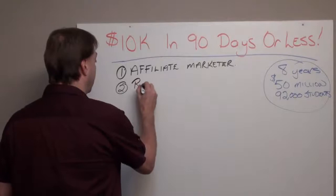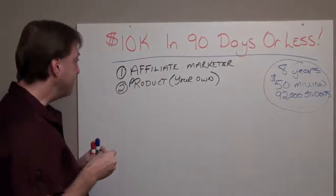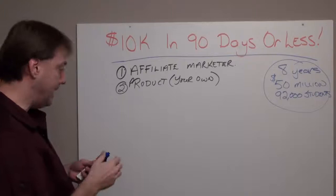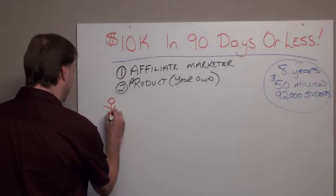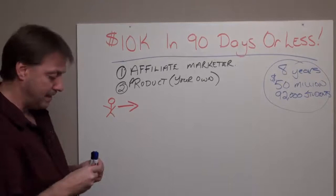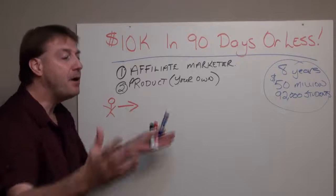Now, what are the drawbacks to these? The drawbacks of being an affiliate marketer — let's just make a little picture of you. I'm not a very good artist, so don't laugh at my art. So here's you. And you're an affiliate marketer. As an affiliate marketer, what you have to do is research a good converting offer, out of the thousands upon thousands of products in the online industry right now.